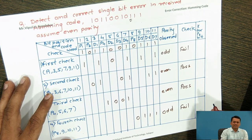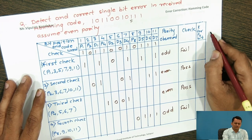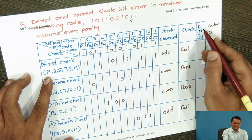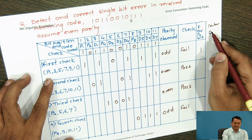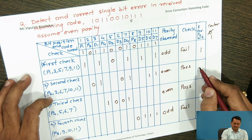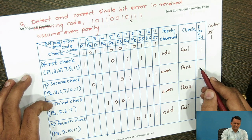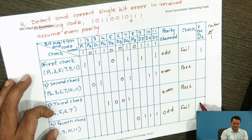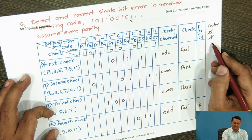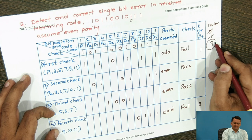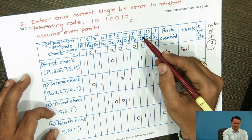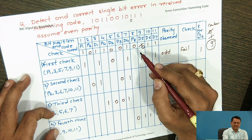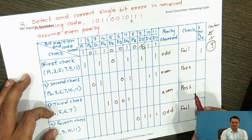To identify the error location, we initialize a counter at zero. Whenever a parity check fails, we add the corresponding k value of Pk to the counter. P1 fails, so we add 1 — counter becomes 1. P2 passes, no increment. P4 passes, no increment. P8 fails, so we add 8 — counter becomes 9. This tells us the 9th bit has the error. We flip bit 9 from 1 to 0, recovering the original data. This is how Hamming code corrects a single-bit error.